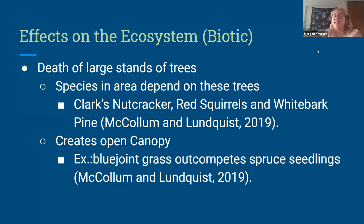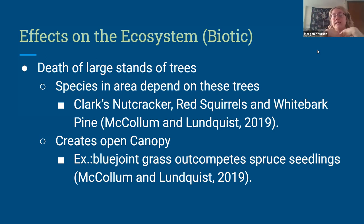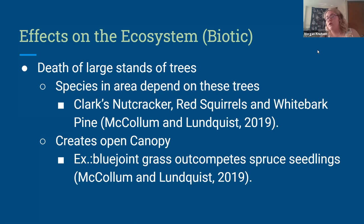The bark beetles just overtake the entire area. When large stands of trees die, it creates an open canopy and allows sunlight in. This allows species that wouldn't normally be there to thrive — one example is blue joint grass outcompeting spruce seedlings. The beetles destroyed the spruce populations, allowing birds and other mammals carrying plant seeds to move in. This blue joint grass out-competed the spruce seedlings, changing the ecosystem. The species dependent on those trees are no longer there, and this is an ever-changing process as beetles continue to increase and move into other areas.